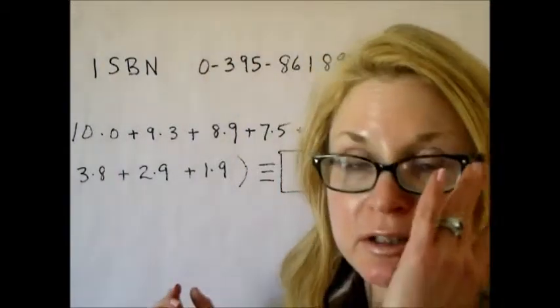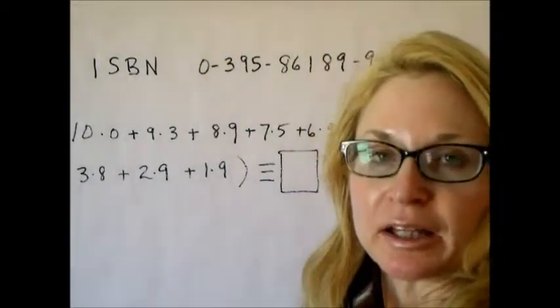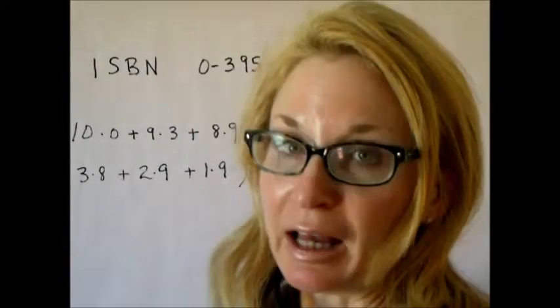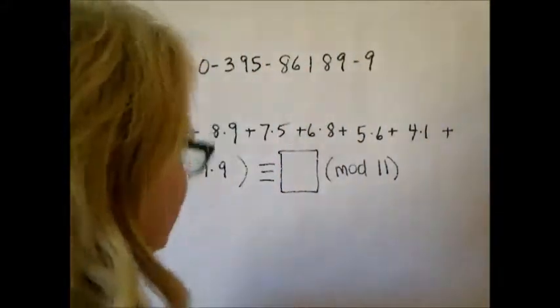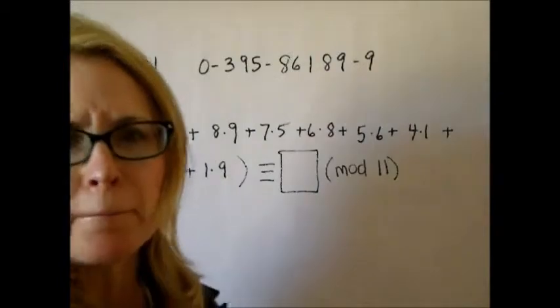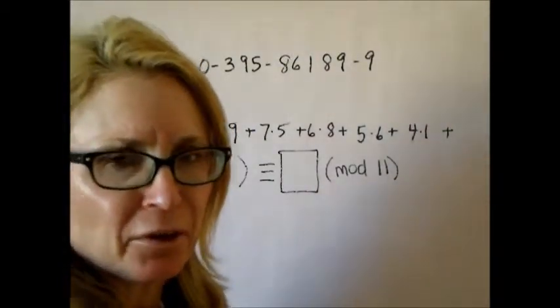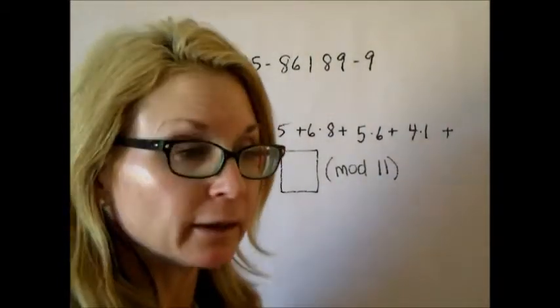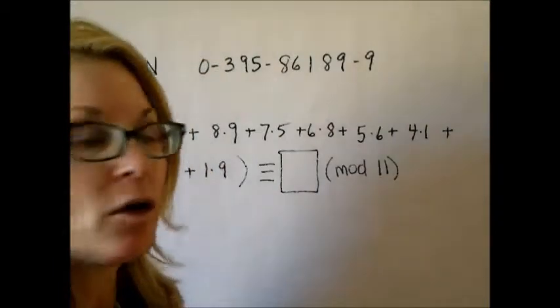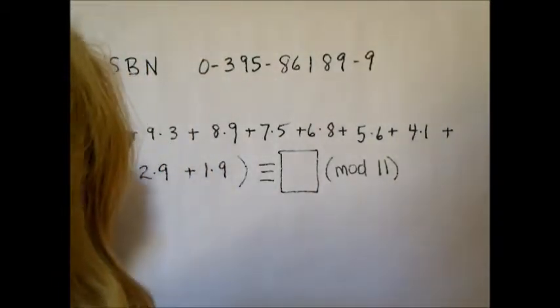If it's congruent to zero, then it's a valid ISDN number, and if it's not, then it's not valid. So using the modular arithmetic theorem will reduce our work greatly. It says that we can just do this element-wise.